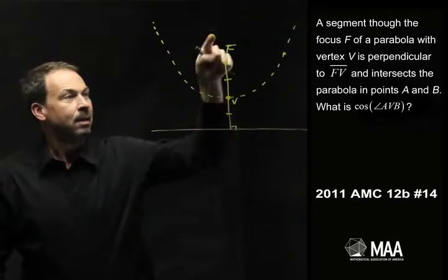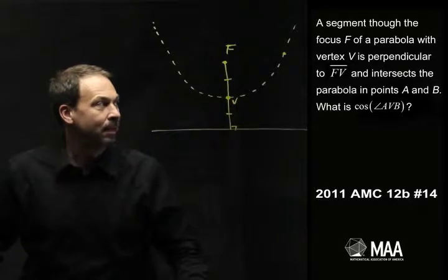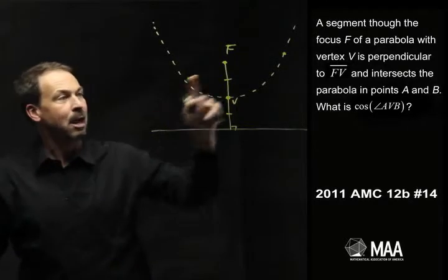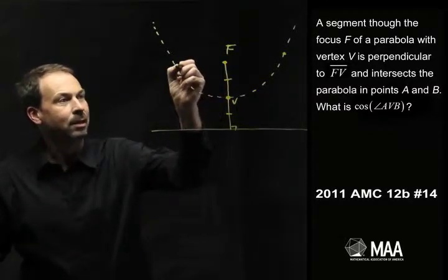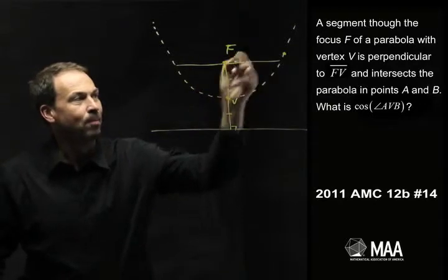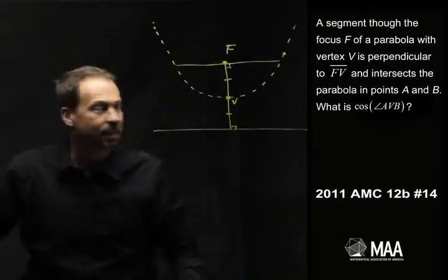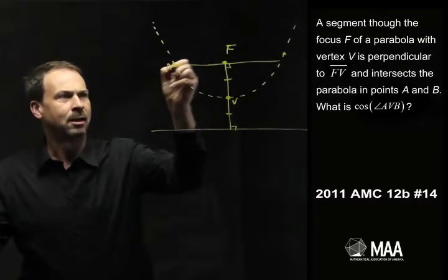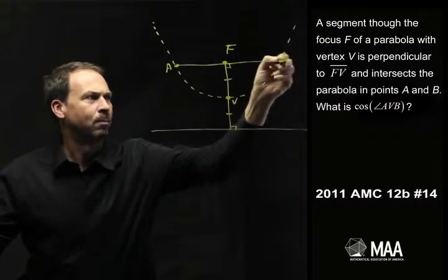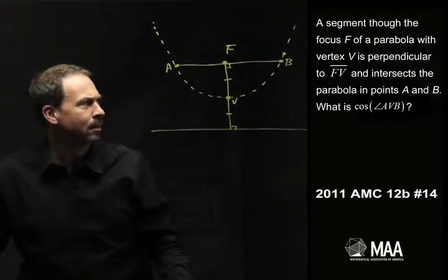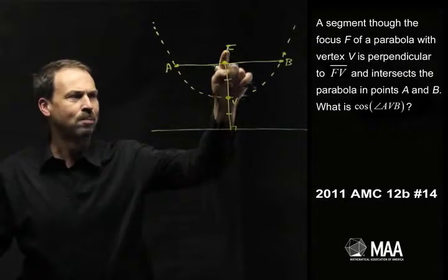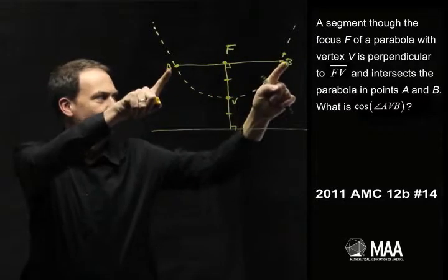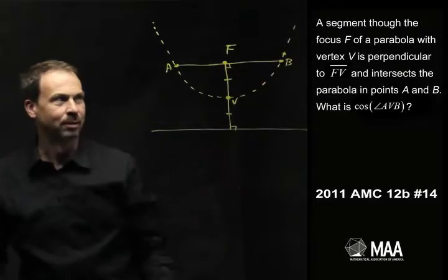Focus F, vertex V. There's another line through F that's perpendicular to FV that intersects the parabola at two points A and B. I know I didn't read that very well, but did I actually get it correct in the end? So there's a line segment through F, perpendicular to FV, intersecting the parabola at two points A and B. That's the picture for the question.